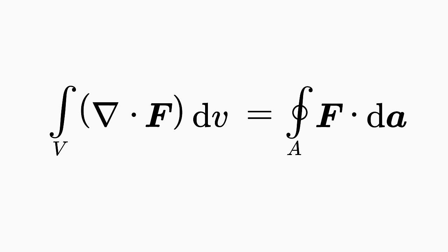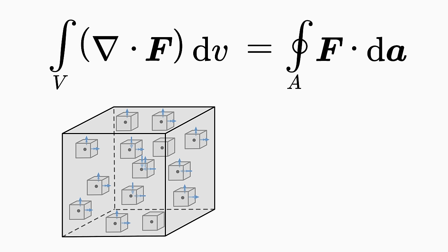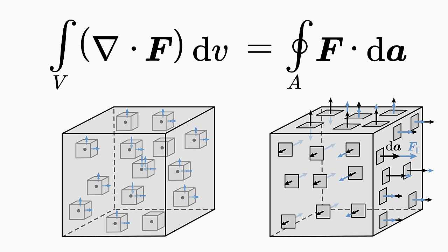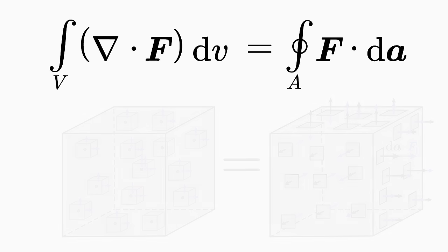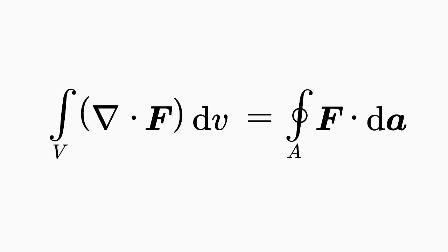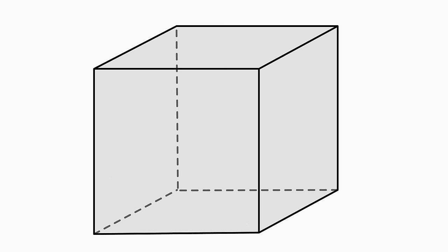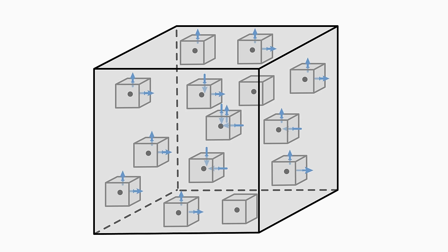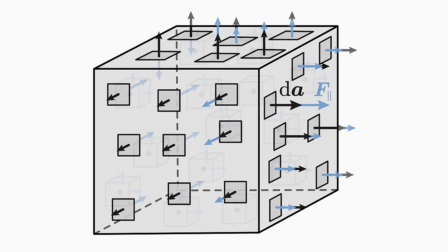So, let's summarize the statement of the divergence integral theorem. On the left side is the sum of the sources and sinks of the vector field within a volume, and on the right side is the total flux of the vector field through the surface of that volume, and the two sides are equal. The divergence integral theorem thus states that the sum of the sources and sinks of a vector field within a volume is the same as the flux of the vector field through the surface of that volume.